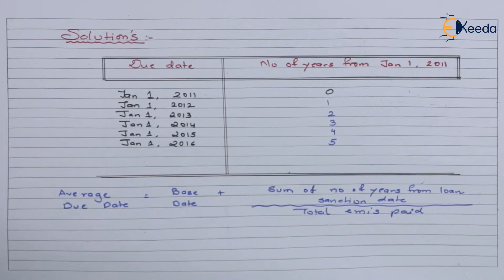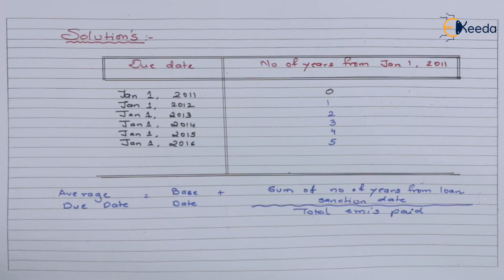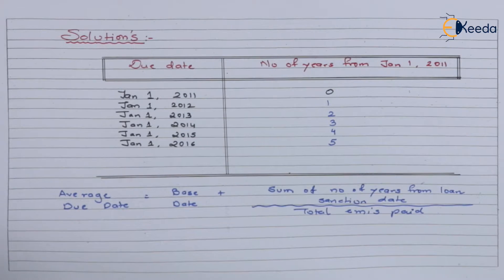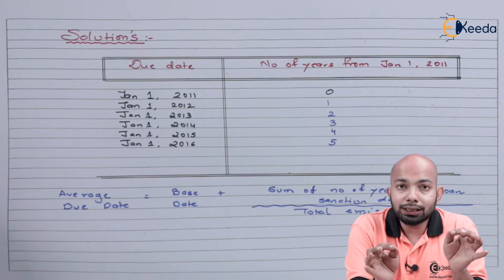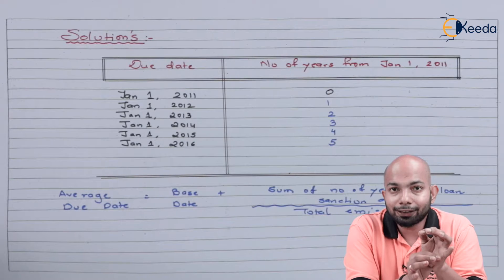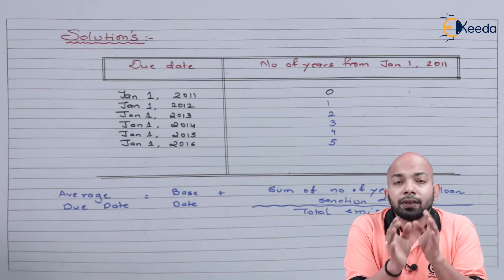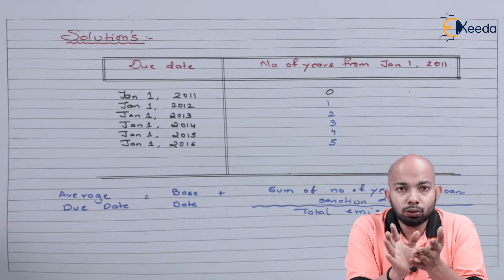The formula is: Average Due Date = Base Date (loan sanction date) + Sum of number of years from loan sanction date to each EMI payment, divided by the total number of EMIs paid. We total all the years from 2011 when each EMI is paid, divided by the total number of EMIs, which is five.